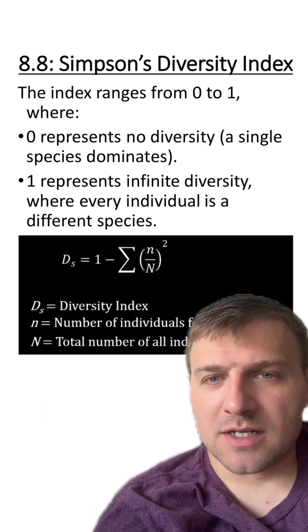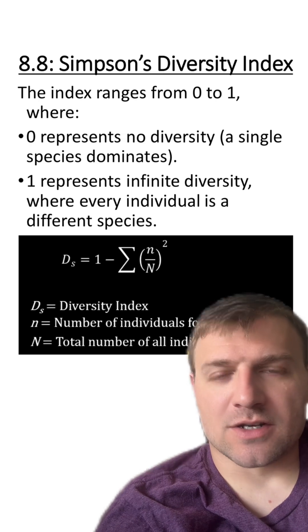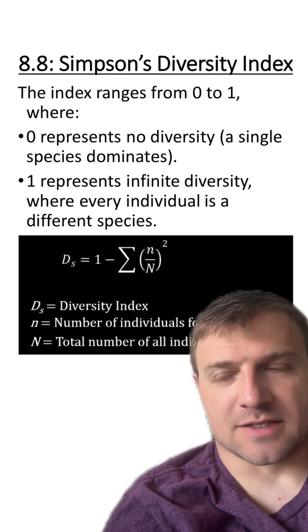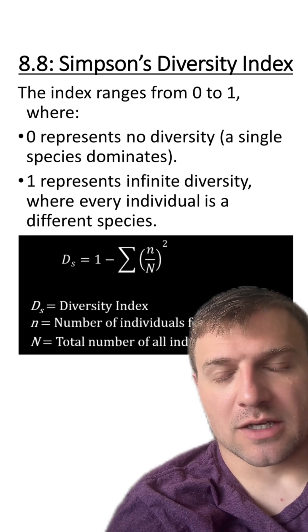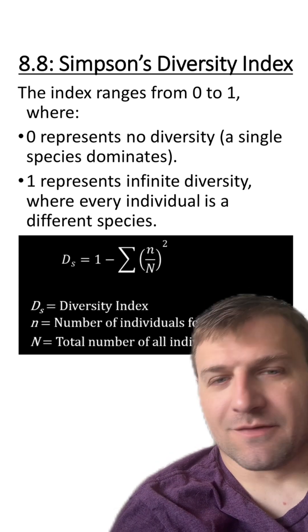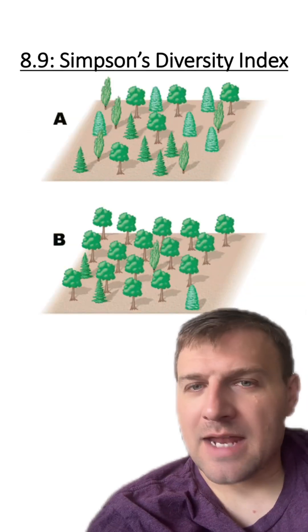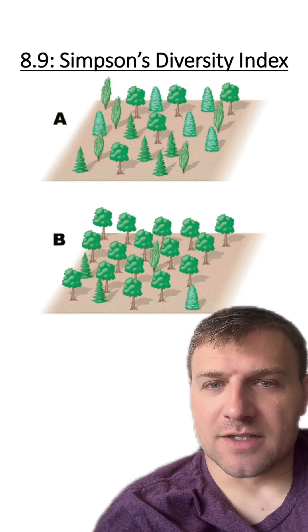When we come to our number or the diversity index, it's going to range from zero to one. Zero represents no diversity in a community. This is a single species dominating that community, while a one represents infinite diversity, where each individual represents a different species. This is basically looking at how diverse an ecosystem is.